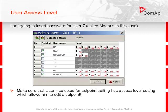I am going to insert the password for user 7 called 'Modbus' in this case, because this user has access rights to edit the emergency start delay setpoint. Other users who can edit the setpoint are U0 and U6.